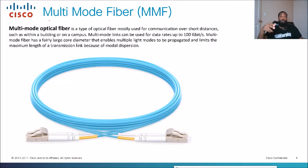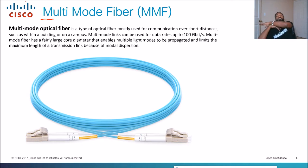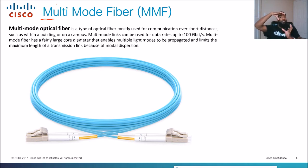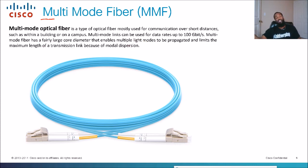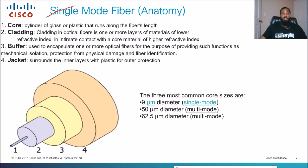This is in contrast to multi-mode fiber, which is a type of optical fiber mostly used for communication over short distances — my mnemonic: M for multi-mode, M for midget, meaning it's short. Such as within a building or on a campus. Multi-mode links can be used for data rates up to 100 gigabits per second. Multi-mode fiber has a fairly large core diameter compared to single mode fiber. It enables multiple light modes to be propagated, but limits maximum transmission length because of modal dispersion. The anatomy and jacket are pretty much the same as single mode.